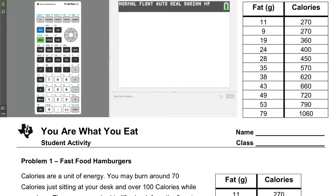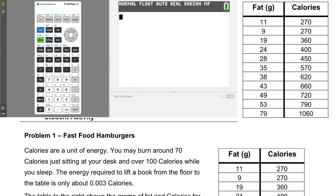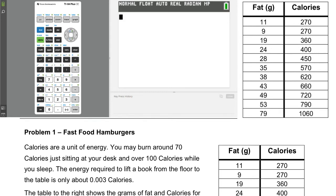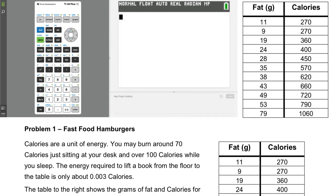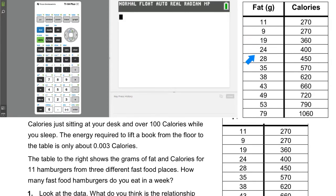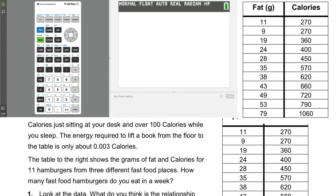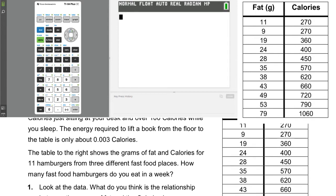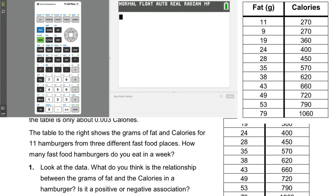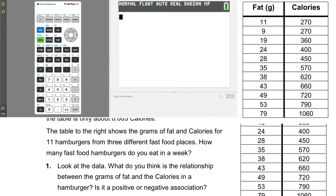Fast food hamburgers. This little description says that calories are a unit of energy. You may burn around 70 calories just sitting at your desk and over 100 calories while you sleep. The energy required to lift a book from the floor to the table is only .003 calories. Okay. Pretty interesting. So the table to the right shows the grams of fat and calories for 11 hamburgers from three different fast food places. How many fast food hamburgers do you eat in a week? Hmm. Well, mine is zero. But I do like myself a hamburger or a cheeseburger.